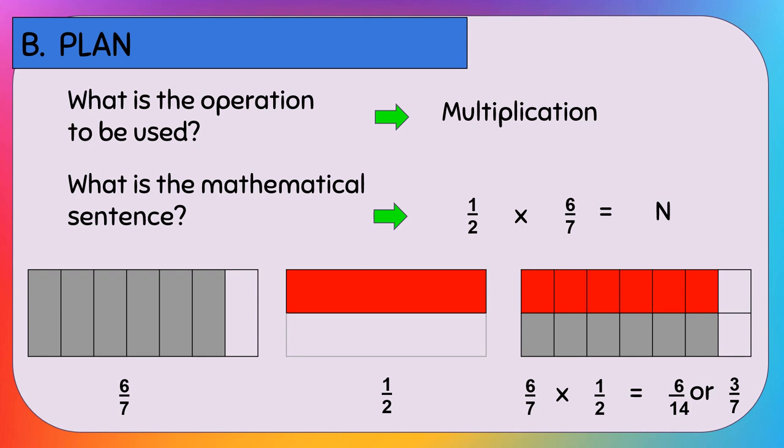How do we see that 3/7 is correct? Since we have 6/7 at the start, we can split it into two halves: the first half is 3, and the second half is the other 3. So the half that falls within one bracket is 3 out of 7 — that's our answer.